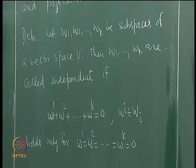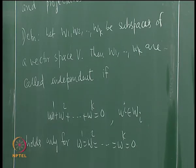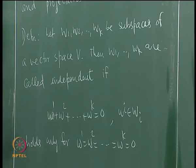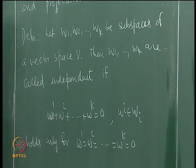If I take any linear combination of vectors in W1, W2, ..., Wk and equate that to 0, then each scalar coefficient must be 0 — that is what this means. Subspaces are called independent if this condition is satisfied.